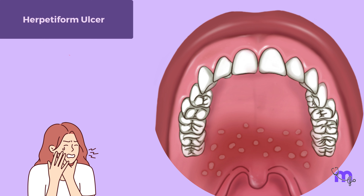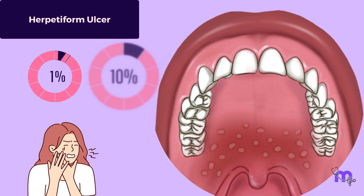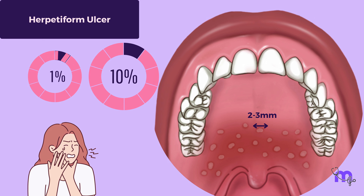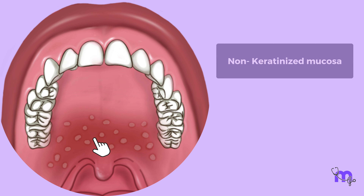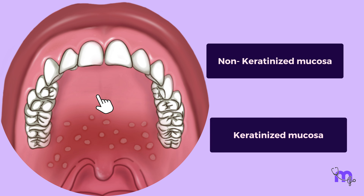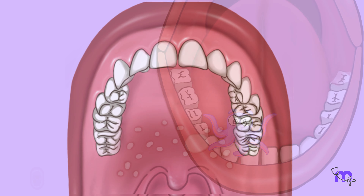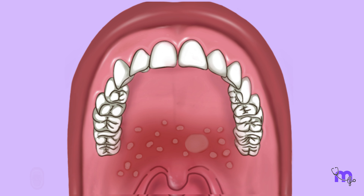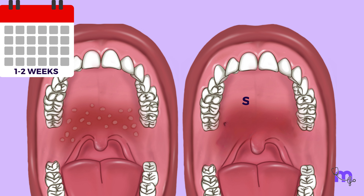The third category, herpetiform ulcers, is the least common type of RAS, affecting only 1 to 10% of patients. These ulcers are small — around 2 to 3 mm — numerous, and very painful. Unlike minor aphthous ulcers, herpetiform ulcers can erupt on both the non-keratinized and keratinized mucosa, and typically appear on the tongue and floor of the mouth. In some cases, these small ulcers may merge into a single, larger, irregular ulcer. Herpetiform ulcers heal within 1 to 2 weeks but often leave scars.